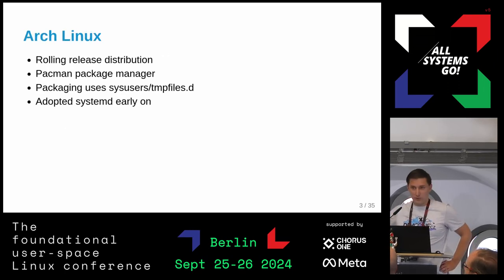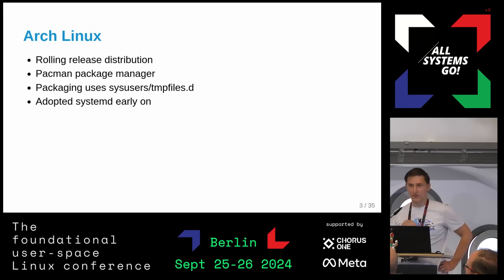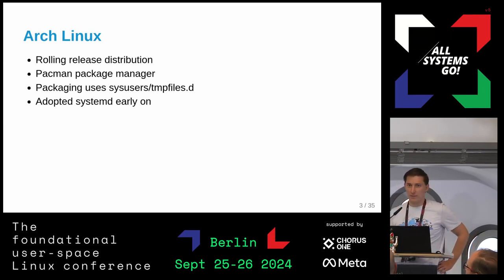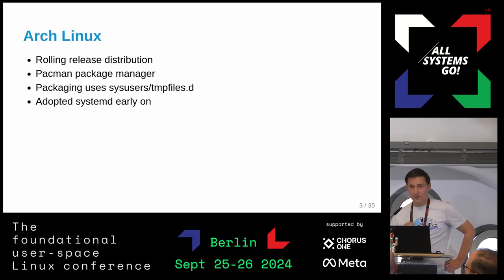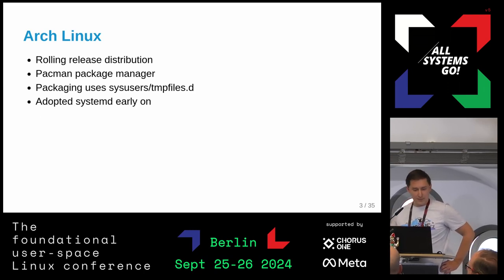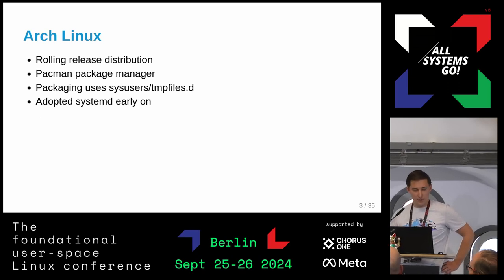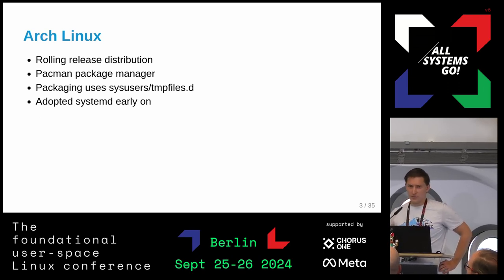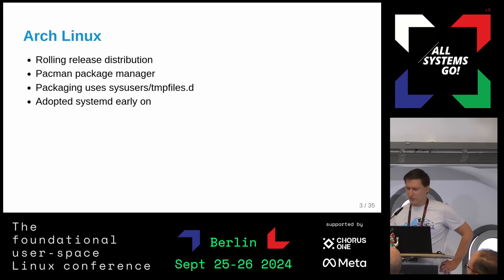For those who don't know, Arch Linux is a rolling release distribution, so there are no point releases. Every month we produce an ISO. You can install Arch and from there just update continuously until the end of time. We have our own package manager, Pacman — this is also different from other distributions. And we were early adopters of systemd and basically use most things.